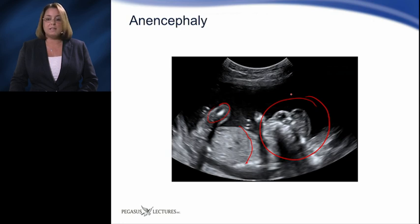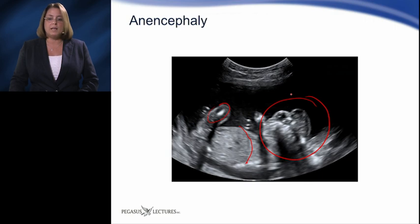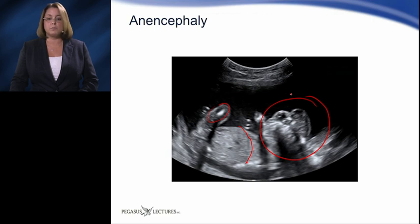Anencephaly may be seen late in the first trimester. It is a severe, lethal, and fairly common type of neural tube defect that is caused by the failure of the neural tube to close. Anencephaly is the absence of the cranial vault and the brain tissue. With anencephaly, the brain stem, base of the skull, and orbits are usually present.